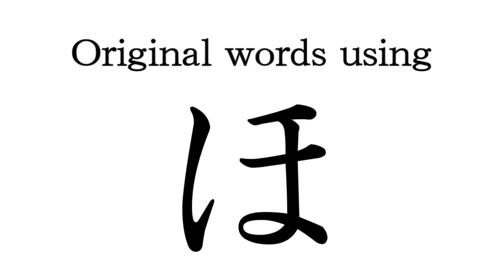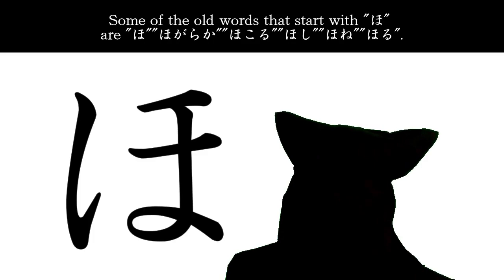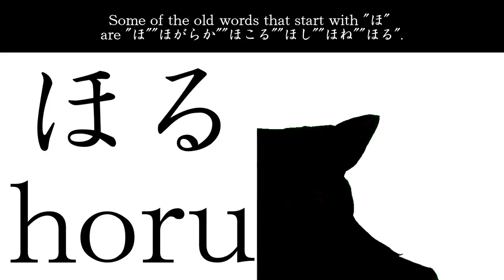Some of the old words that start with ho are ho, ho, hoganaka, hokoru, hoshi, hone, horu.